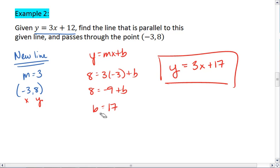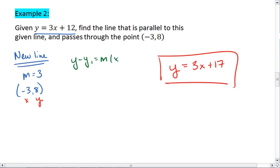If you use point slope form, we get y minus y1 equals m times x minus x1. Plug in our values, we get y minus 8 equals 3 times x minus negative 3. And that is the equation of the line.